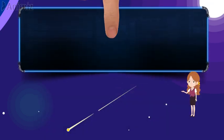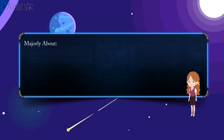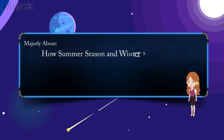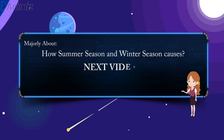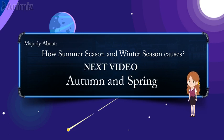So children, in this video we have shown you majorly about how summer season and winter season occur in both the hemispheres. In our next video we will learn very clearly about the autumn and the spring season.